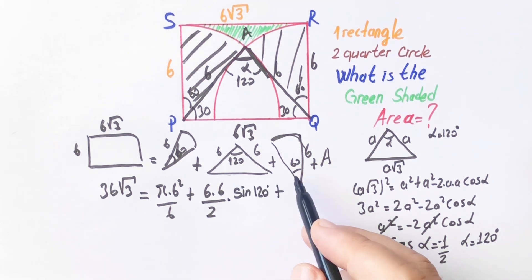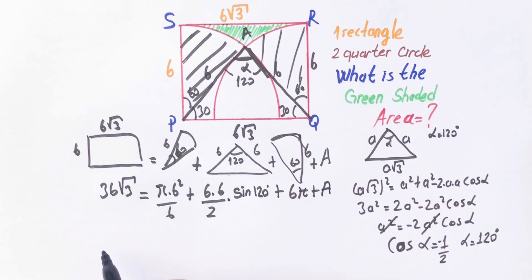Plus 6 pi, plus 6 pi plus A. 36 root 3 equals.